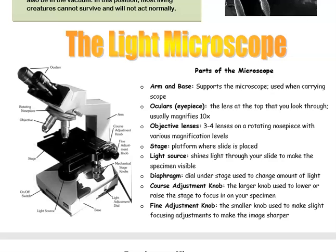The objective lenses — typically there are 3 or 4 — are on a rotating nosepiece and have various magnification levels. To get your total magnification, you have to multiply the magnification of the ocular lens times the magnification of the objective lens.